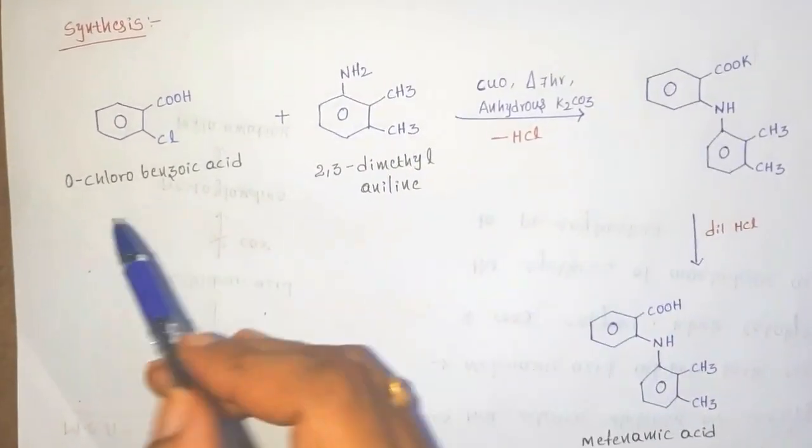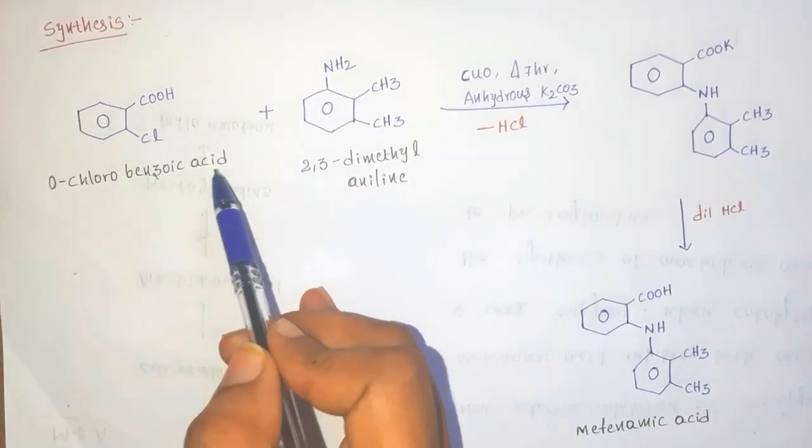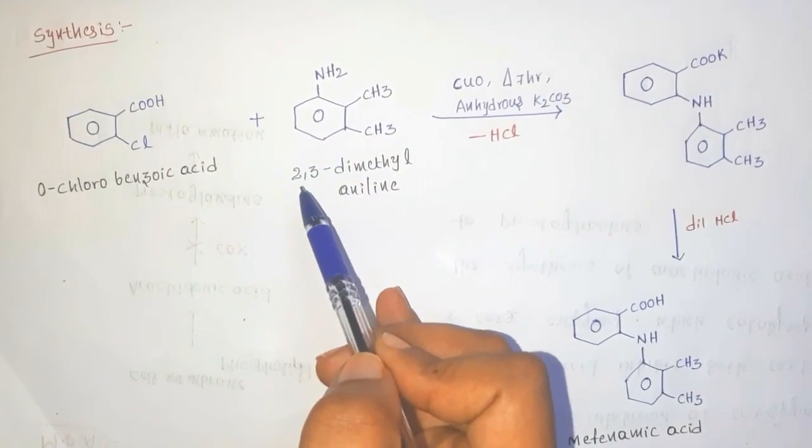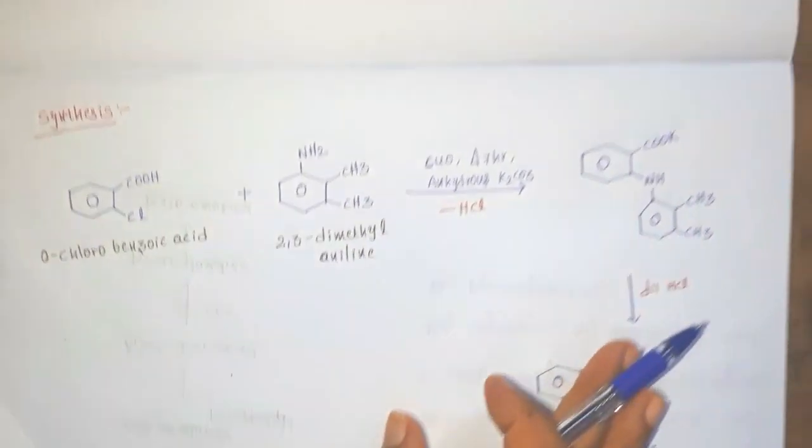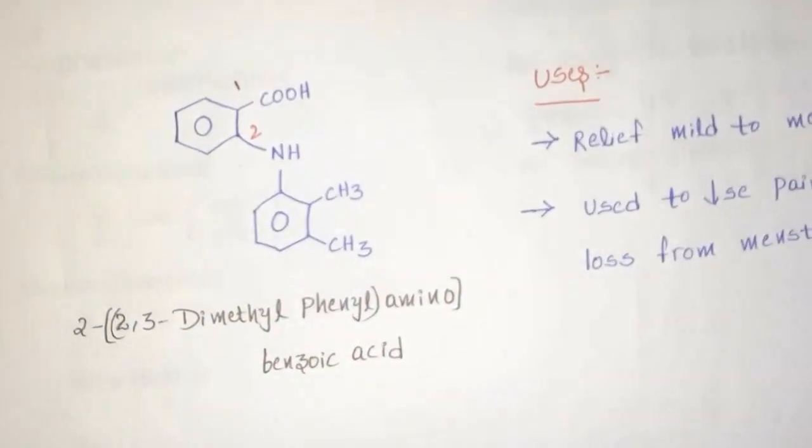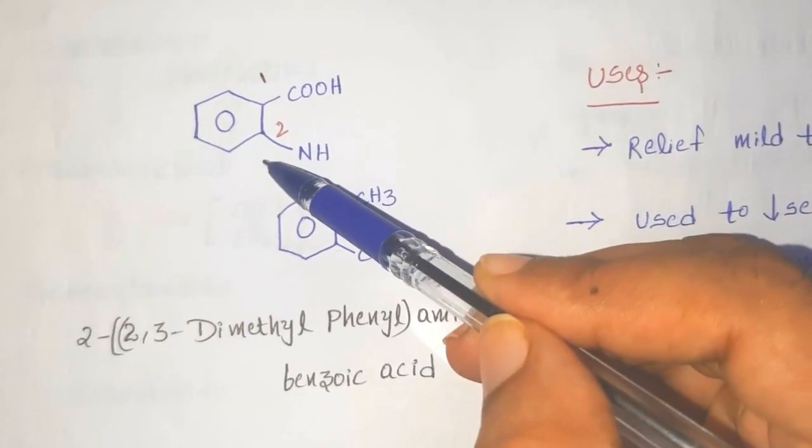Next, coming to the synthesis. The starting material is ortho-chloro benzoic acid and the second starting material is 2,3-dimethyl aniline. How to remember these starting materials? First we have to clearly observe the main structure.